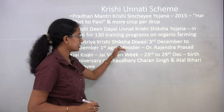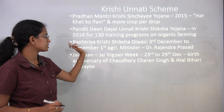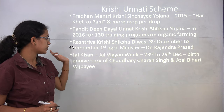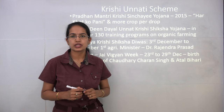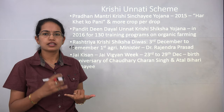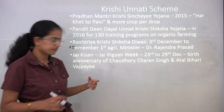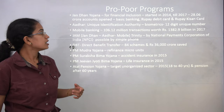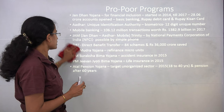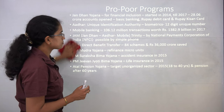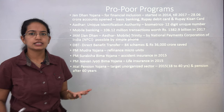Rashtriya Krishi Shiksha Divas is named after the first agriculture minister Dr. Rajendra Prasad. The Jai Kisan Jai Vigyan Week runs from 23rd to 29th December to celebrate the birth anniversaries of Chaudhry Charan Singh and Atal Bihari Vajpayee.